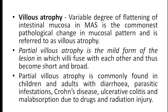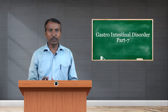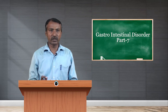Villus atrophy is the commonest pathological change in mucosal pattern. Partial villus atrophy is a mild form of lesion in which villi fuse with each other and become very short and broad, resulting in a shortened intestine due to fusion. This broadening and shortening is commonly found in children and adults with diarrhea, parasitic infestations, Crohn's disease, ulcerative colitis, malabsorption due to drugs, and radiation therapy.